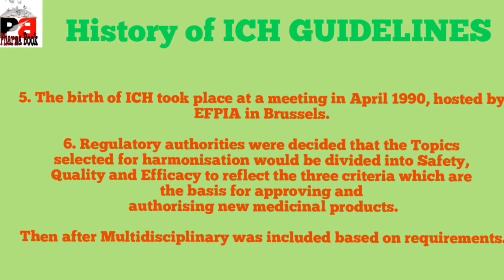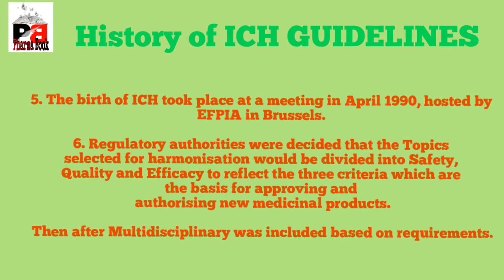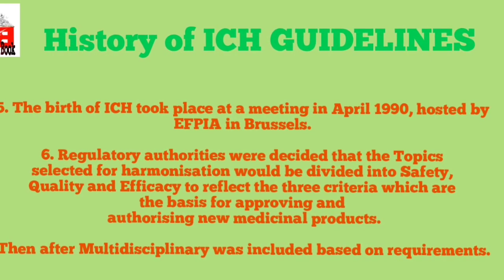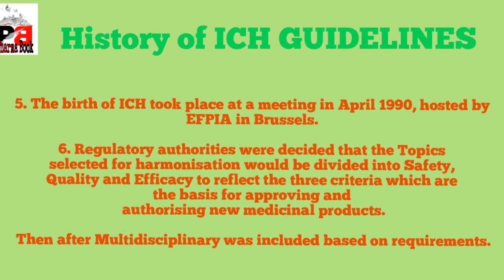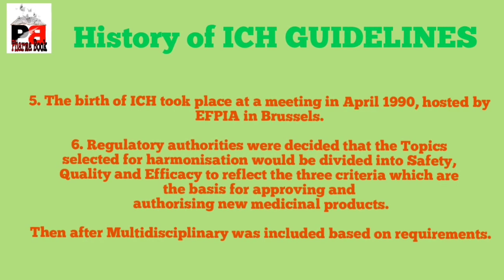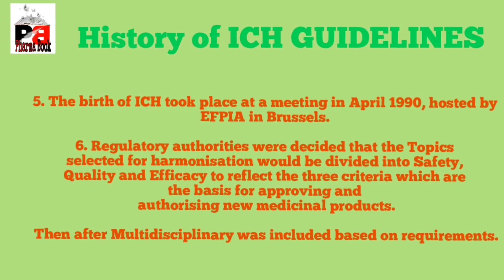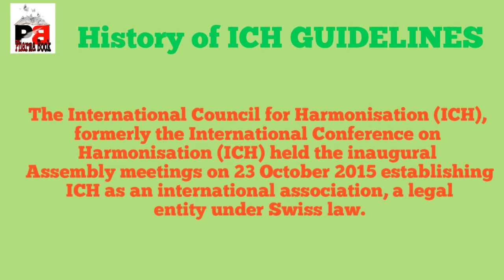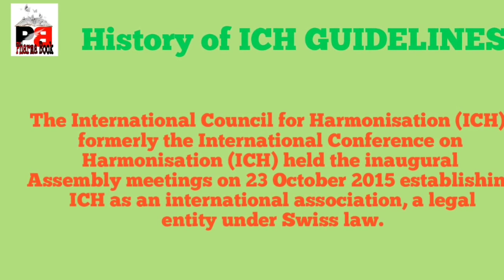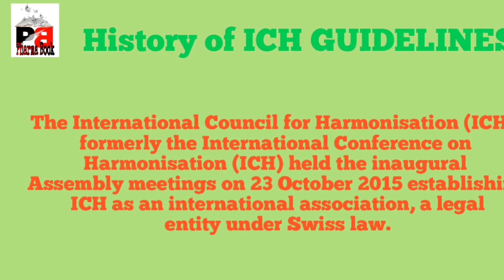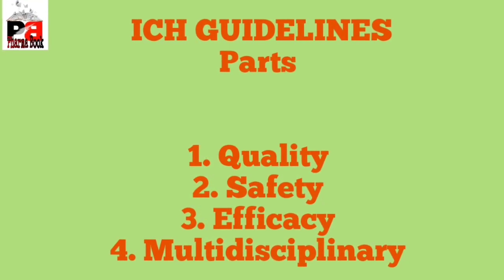After discussions and meetings, the ICH was formed in April 1990. After formation, they selected three topics for harmonization: number one, Safety; number two, Quality; number three, Efficacy. Then Multidiscipline was later included. Formerly ICH was named as International Council for Harmonization, then it was changed to International Conference on Harmonization.